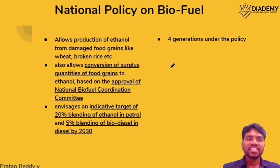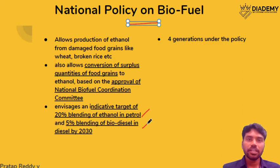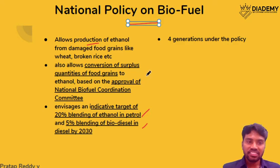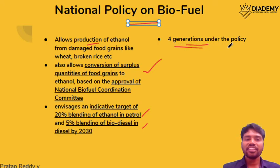National Policy on Biofuel: The target is to reach 20% blending of ethanol in petrol and 5% in biodiesel by 2030. The first generation of this program takes additional food material or additional food sources and utilizes them to produce biofuels. We have already discussed the four generations under this policy — ranging from food-based biofuels to genetically modified microorganisms.